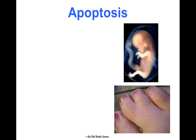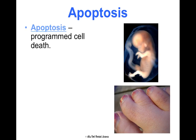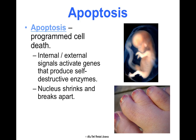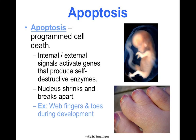Something really cool that exists is apoptosis — programmed cell death. This is when your cell is regulated by internal or external signals to activate genes that produce self-destructive enzymes, causing the cells to basically commit cell suicide. The nucleus shrinks, shrivels up, dissolves, and breaks apart so the cell dies. This is a good thing — this is why your toes can be separated, because apoptosis happens. If it doesn't happen, you can get webbed fingers or webbed toes. This is what's going on in development to shape you.